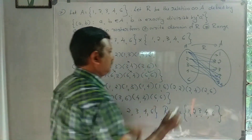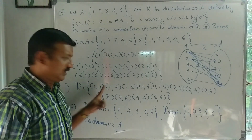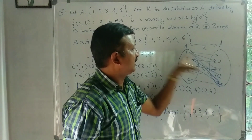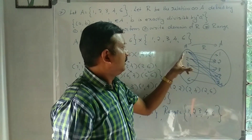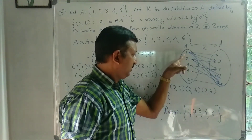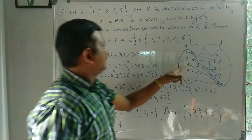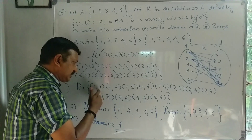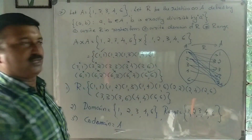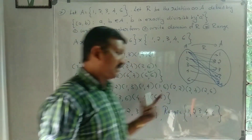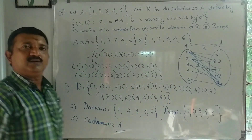The domain of R is {1, 2, 3, 4, 6}, the range of R is {1, 2, 3, 4, 6}, and the codomain is {1, 2, 3, 4, 6}, since the relation is defined on A × A.